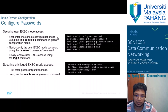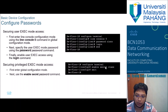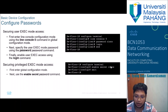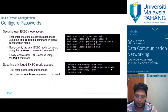To secure privileged exec mode, enter 'configure terminal', then 'enable secret class'. This sets 'class' as the password for privileged exec mode. Once you exit and try to re-enter privileged mode, you must enter the password 'class'. For VTY lines (used for remote Telnet/SSH access), enter 'line vty 0 15', then 'password cisco', 'login', and 'end'. This secures all 16 VTY lines.